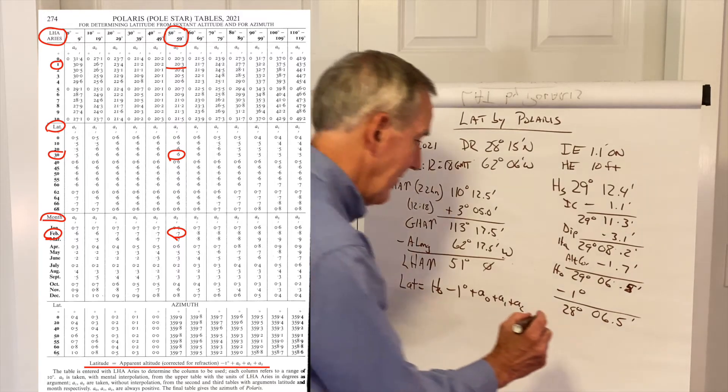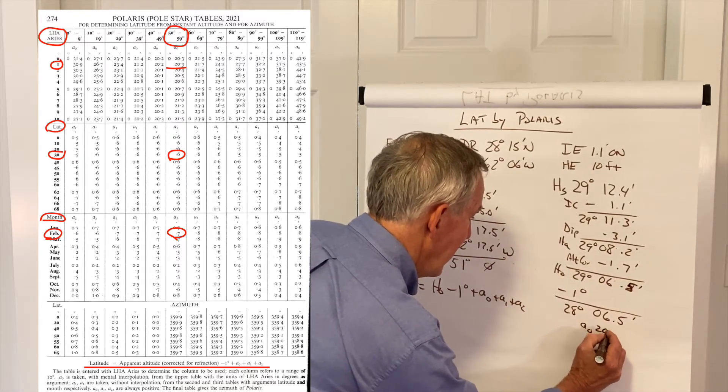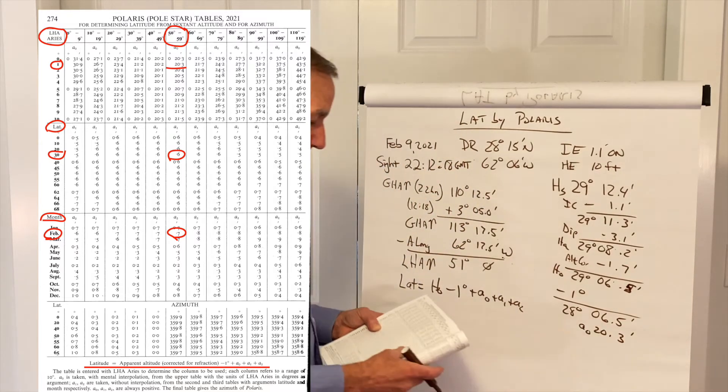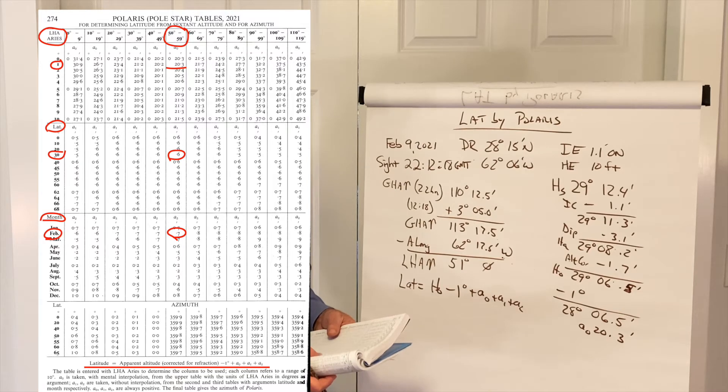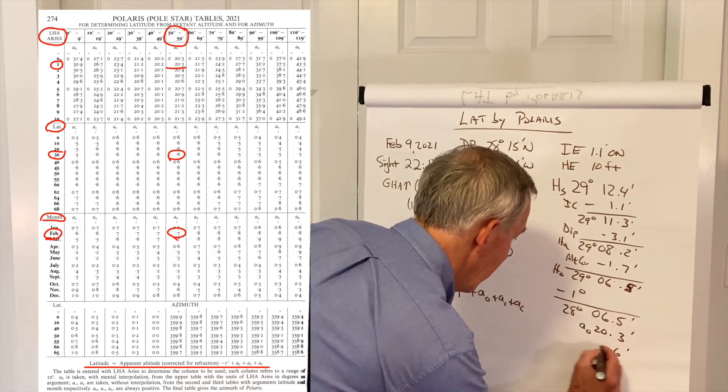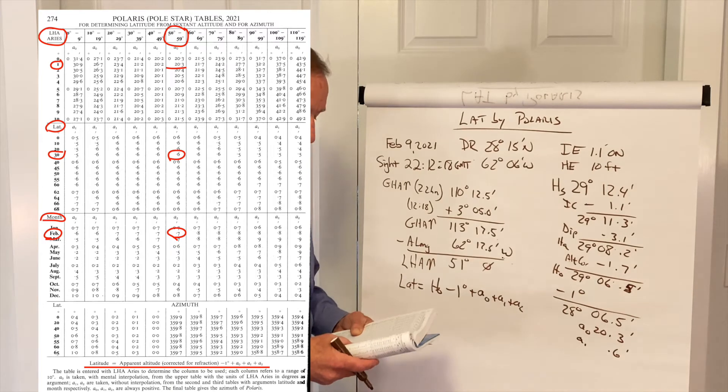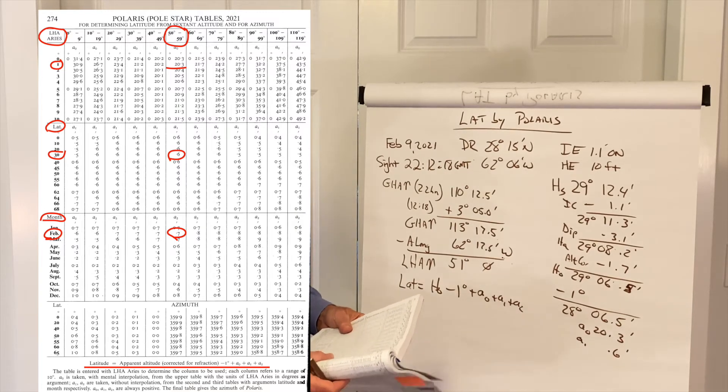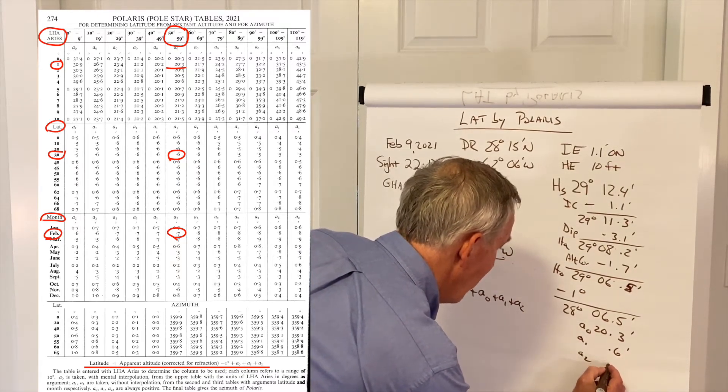And under the 50 to 59 column, we find opposite 1, a correction for A sub 0 of 20.3. We continue down that column to the next box, which is the latitude box, and we find a value that's closest to our DR latitude, which in this case is 30, and that correction will be 0.6. That's A sub 1. If the values change dramatically, you can interpolate, but typically, this correction stays the same for several degrees of latitude. Then we continue down for the month, and we're in February, so we would pull out a value for A sub 2 of 0.7.